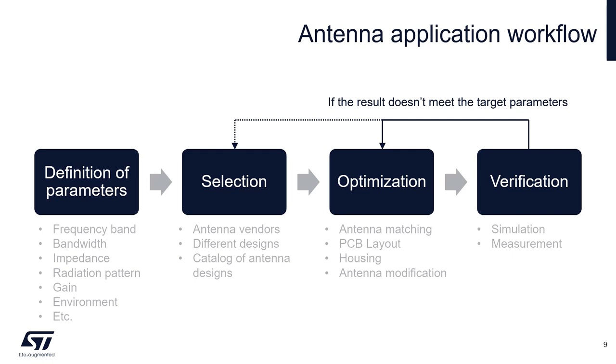Antenna application workflow is usually an iterative process because parameters depend on target environment which is usually unique to the design. At first we must define what antenna parameters we need - frequency band, bandwidth, radiation pattern, etc. Then we select appropriate antenna type, optimize the antenna to our design, and verify that the parameters match our needs. If not, we have to optimize the antenna or select another type.